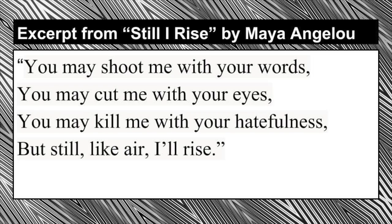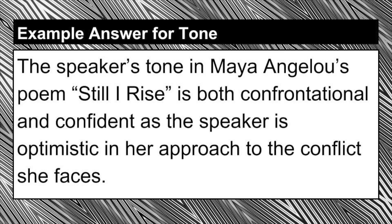Part two to assigning great tone words to a poem: look at the word choice to see what subtleties might reveal about the tone. As I read this stanza, the verbs 'shoot,' 'cut,' and 'kill' jump out at me. Though the lines are talking about words, looks, and hatred, those verbs make the conflict feel physically harmful to the speaker, so I could argue that the tone is also aggressive or confrontational. My full response would be: 'The speaker's tone in Maya Angelou's poem Still I Rise is both confrontational and confident, as the speaker is optimistic in her approach to the conflict she faces.'